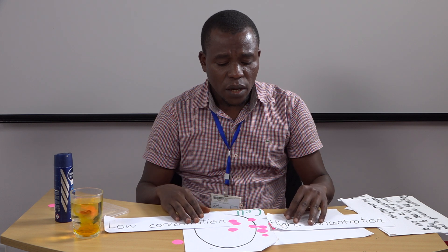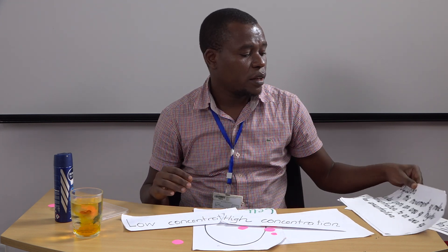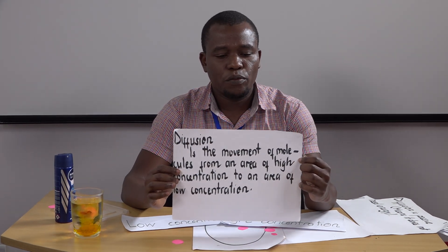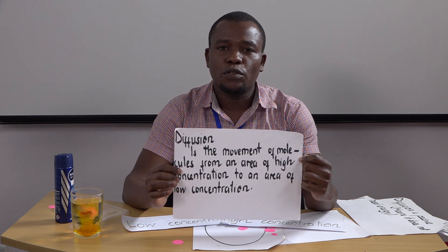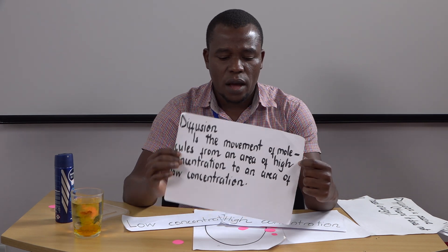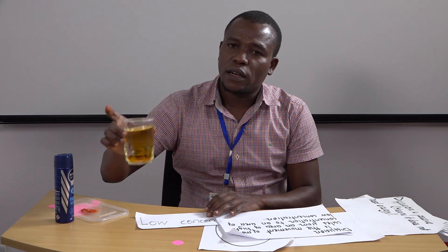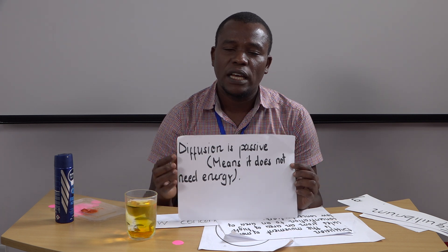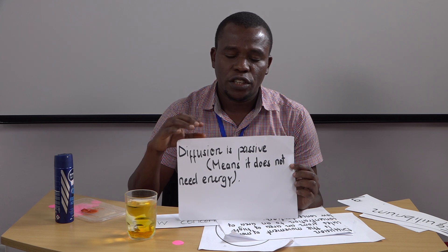In summary, diffusion is the movement of particles from a region where they are in higher concentration to a region where they are in low concentration. From the observation of this glass demonstration, we have realized that no energy is required for particles to move around. That is the concept of diffusion — diffusion is passive. It does not require energy in order to occur.